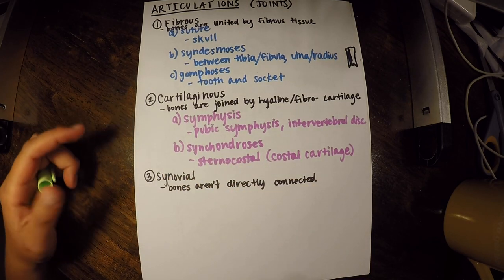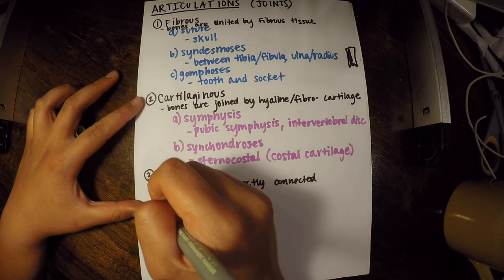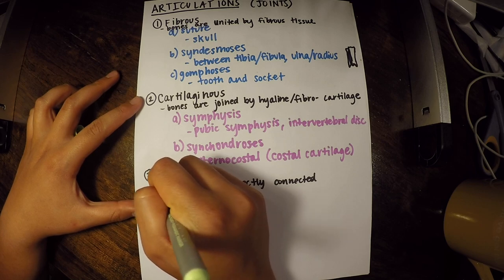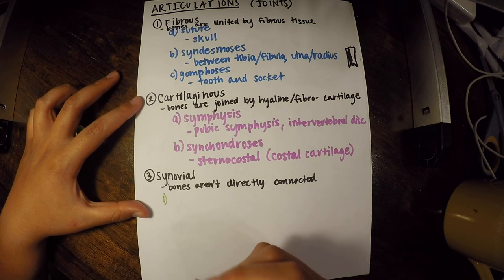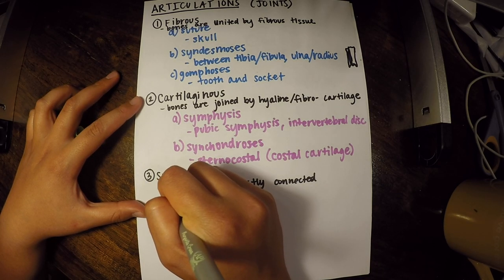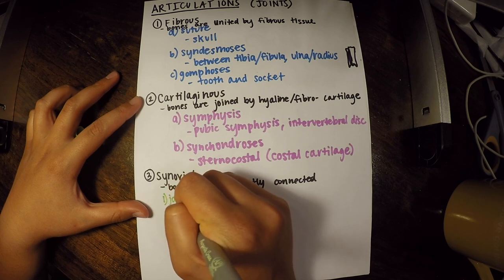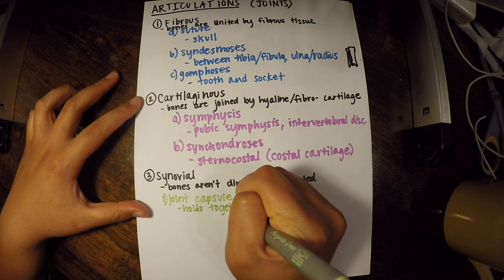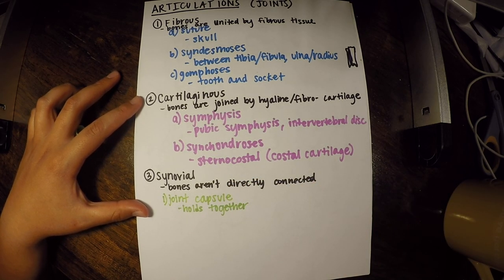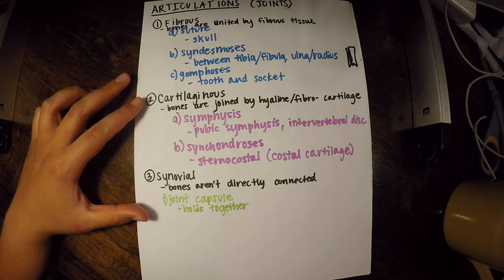There are six characteristics of synovial joints. The first is a joint capsule, which really holds the joint together. The second characteristic is a joint cavity — a space in between the two bone surfaces.